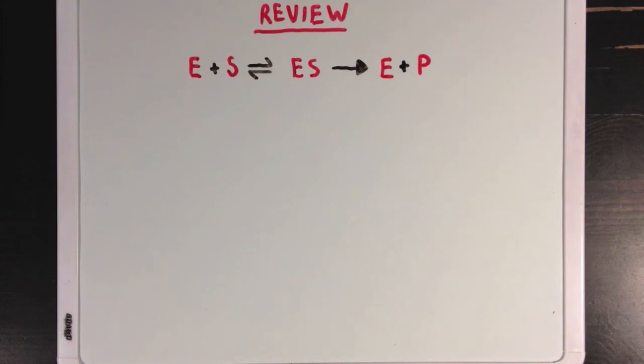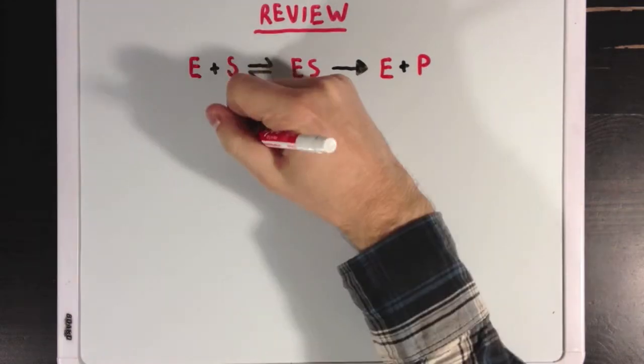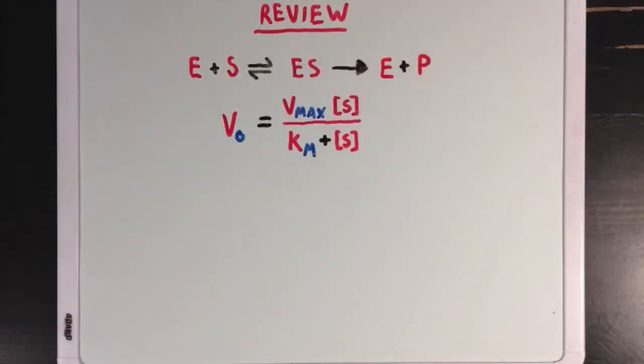let's review the idea that an enzyme's catalysis can be divided into two steps. First, the binding of enzyme to substrate, and second, the formation of products. Using this information, we can derive the Michaelis-Menten equation, which allows us to look at an enzyme's rate of product formation with respect to substrate concentration.